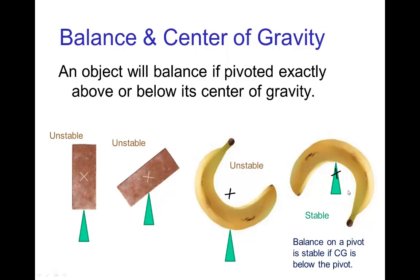But if we have a situation like this last illustration with the banana, here because of the position, the center of gravity is just below the pivot point, then in this case if the banana shifts a little bit, then it will just rock back and forth on that pivot point.